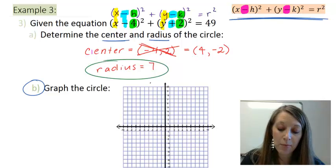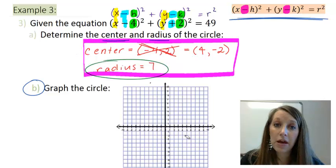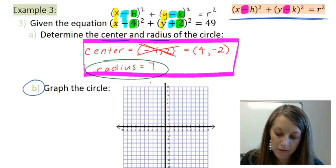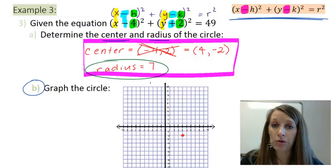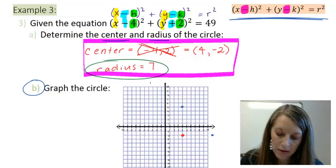Now, to graph this, I'm going to use the information that we have here. Start by counting your center at positive 4, negative 2. And then with your radius, you just count 7 units in every direction. So right 1, 2, 3, 4, 5, 6, 7. I have to go beyond the chart here. 1, 2, 3, 4, 5, 6, 7. So on and so forth.